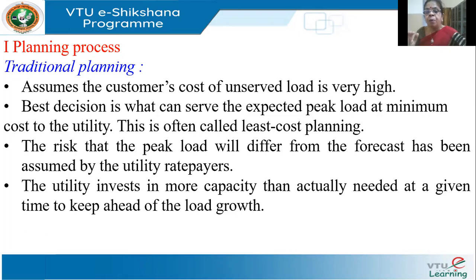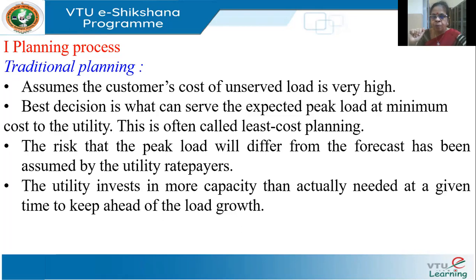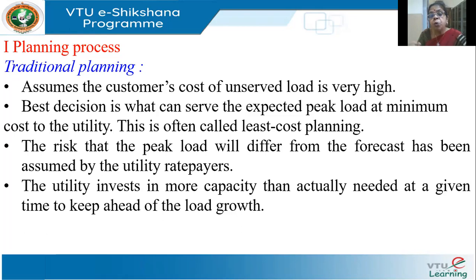If the average and peak are too wide apart, the cost of energy will go up because we have a lot of unutilized capacity most of the time. The utility will plan to serve the peak load at minimum cost. For instance, a base plant for 500 megawatts for the average value, and for the peak load, they may use solar power or wind or some other source. This is called the least cost plan.